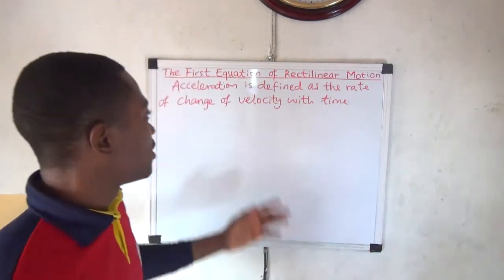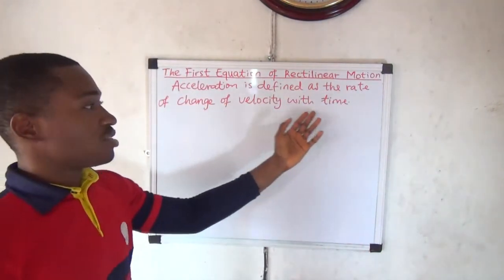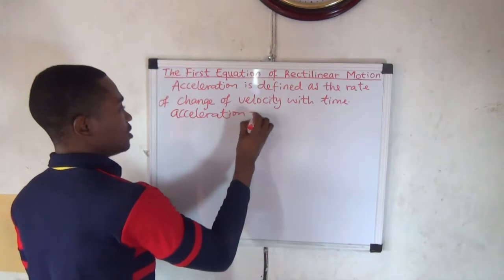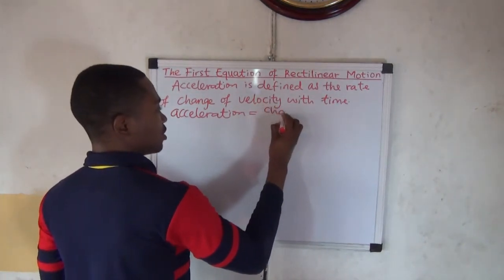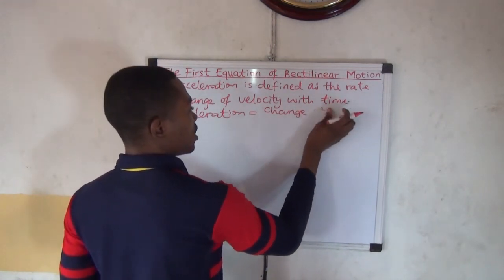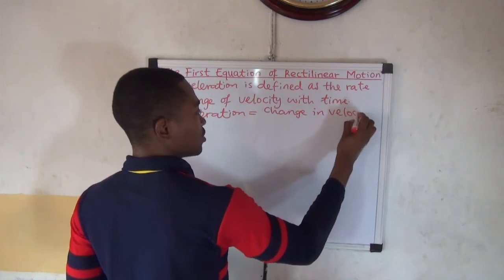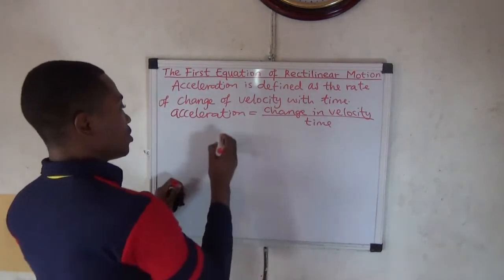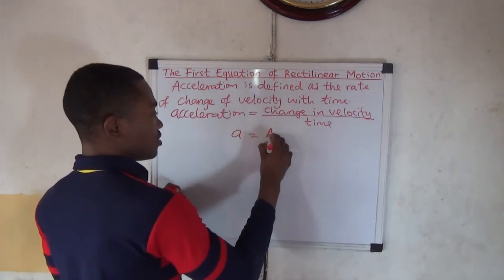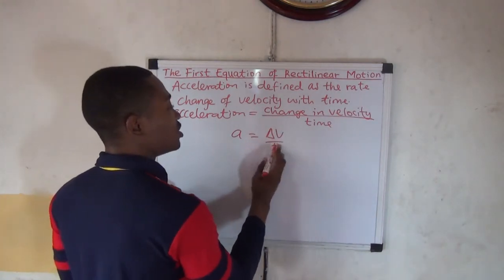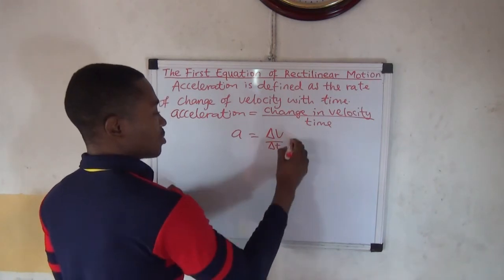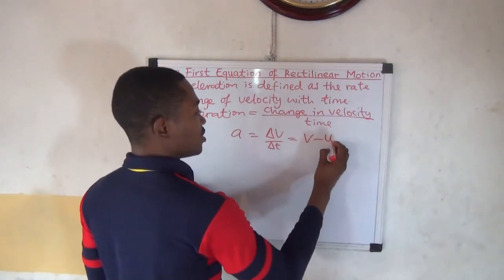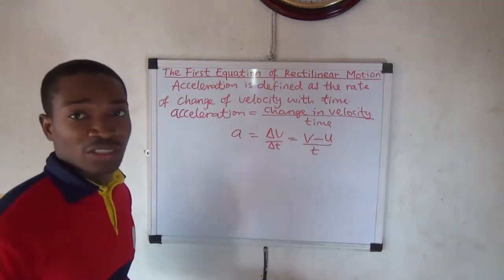Acceleration is defined as the rate of change of velocity with time. We can write: acceleration equals change in velocity divided by time taken. Change in velocity means final velocity minus initial velocity. So: A equals V minus U divided by T.